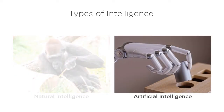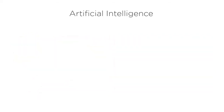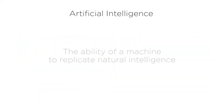Artificial intelligence, however, is a type of intelligence that is not naturally occurring. It is intelligence that was created artificially by humans using machines.